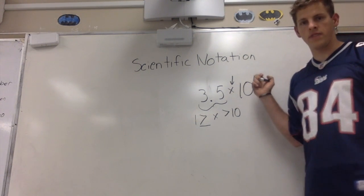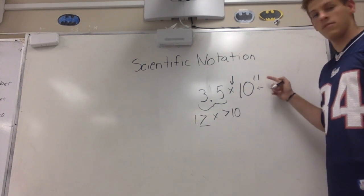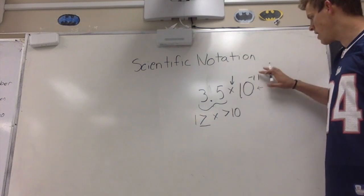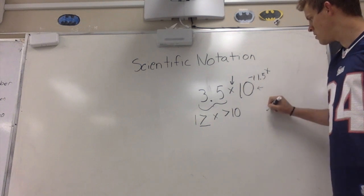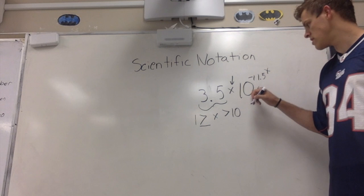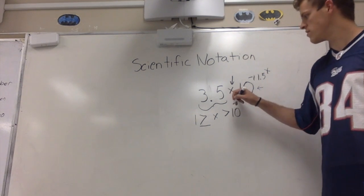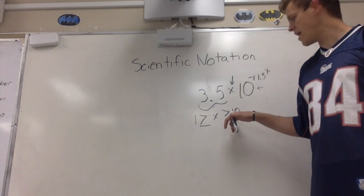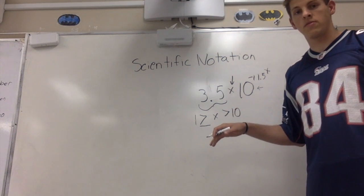Thirdly, is that this power of 10 is an integer. So in this case, 11 — that is an integer. It could be negative 11 and it would still be good. It would not be in scientific notation if it were 11.5. If this were any number but a 10, no longer in scientific notation. If this were something else other than a multiplication sign, not scientific notation. And if this number is less than 1, or it's 10 or greater than 10, then it would not be scientific notation.